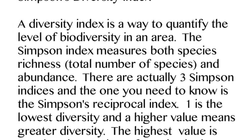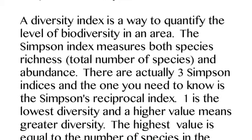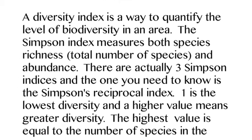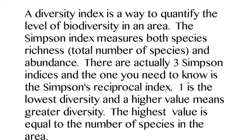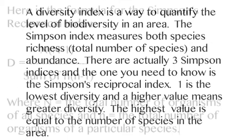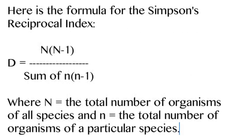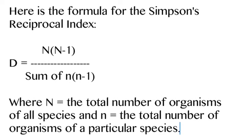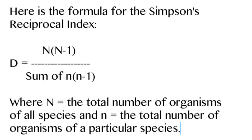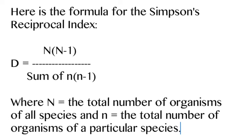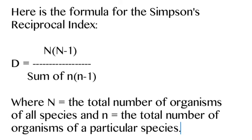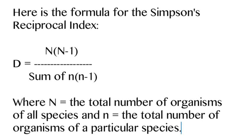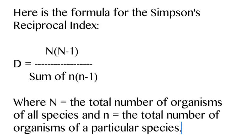To measure all this we use the Simpson Biodiversity Index — specifically the Simpson Reciprocal Index. What's important to know is that 1 is the lowest possible ranking, and the highest ranking equals however many species you have. So if you have 10 species, the highest index value you can get is 10.